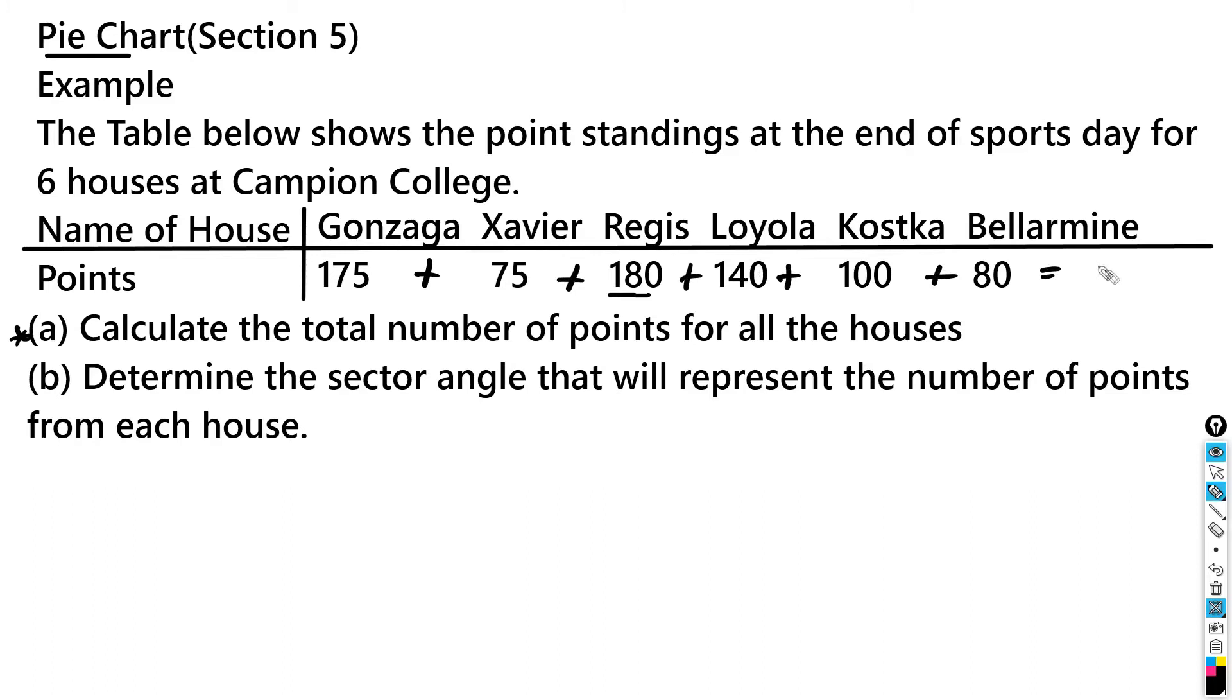When you add these you should actually get the total as 750, which is the total for all houses. It says determine the sector angle that will represent the number of points from each house, and this should also say in the pie chart, because in the pie chart each house is represented by a sector. So what we actually have to do is we have to calculate the sector for each house in terms of the number of points that they gained. For the first one, which is Gonzaga, it would actually be 175 over 750.